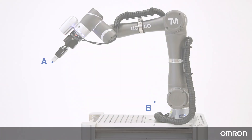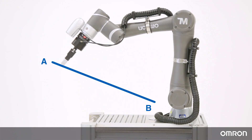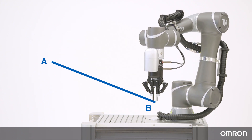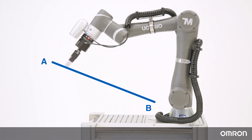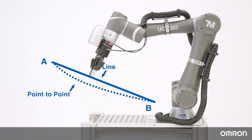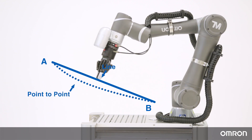Now let's discuss line motion. Line motion is path-dependent and will move in a straight line from point A to point B. Line motion is preferred when trying to avoid collisions with obstacles that could be adjacent to the path AB. Here is an example of linear motion versus point-to-point.